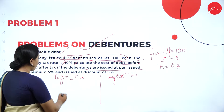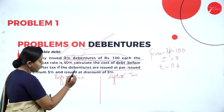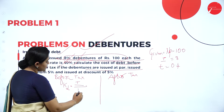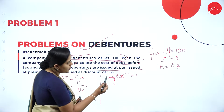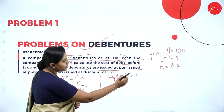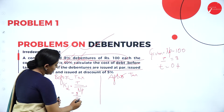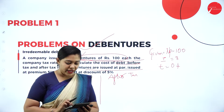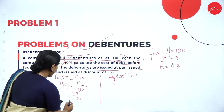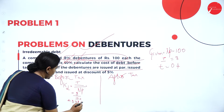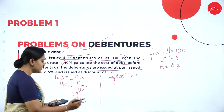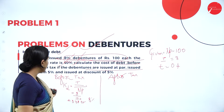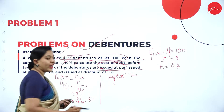Now let us calculate before tax and after tax. The before tax formula — cost of debt, symbolically written as K subscript D — is interest divided by net proceeds. Interest is Rs. 8 and net proceeds is Rs. 100. Using the calculator: 8 divided by 100 is 0.08, or converted into percentage, 8%. This is the cost of debt before tax for issued at par.